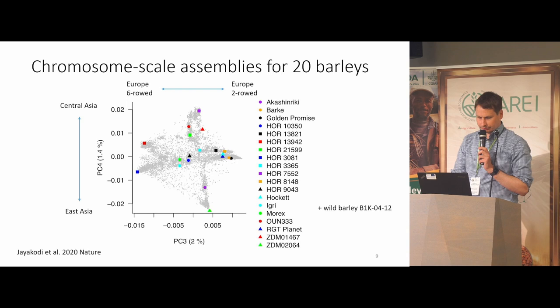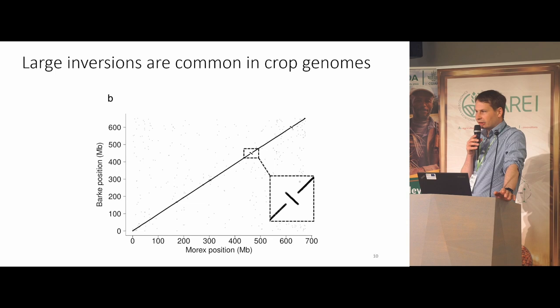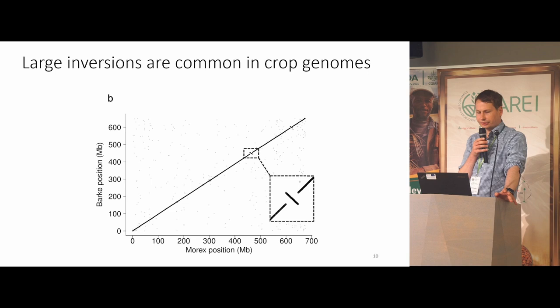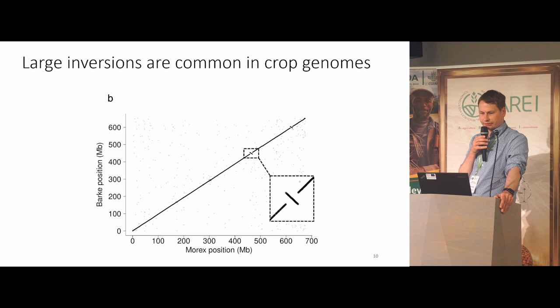The first thing we found when comparing genome assemblies in dot plots is large inversions. This doesn't look large because we are at the scale of a whole chromosome — more than 500 Mb — but we see inverted sequences: sections of the genome changed in orientation, and these sections can be megabases in size.